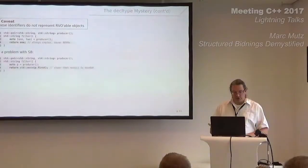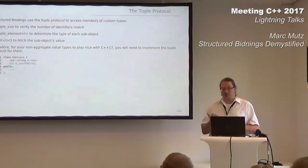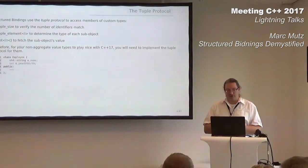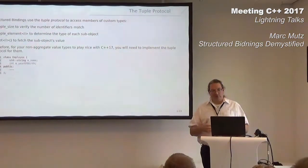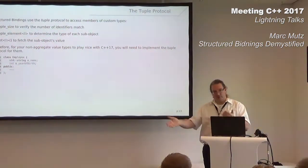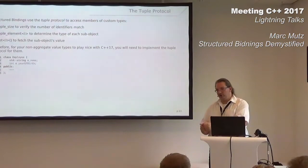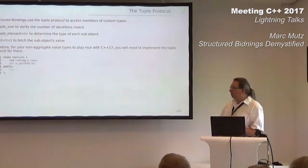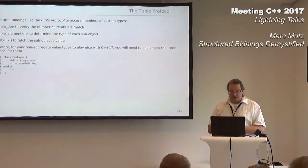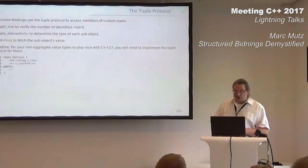The tuple protocol: structured bindings use a tuple protocol to access members of custom decomposable structs, as Andrew Sutton calls them. This consists of three parts: tuple_size, to get the number of elements so the structured binding expression can verify you supplied enough identifiers; tuple_element with an index, to get the type for each element; and get with an index, to get the value of each element. If you want to play nice with C++17 structured bindings, you'll need to implement this for at least some of your classes.